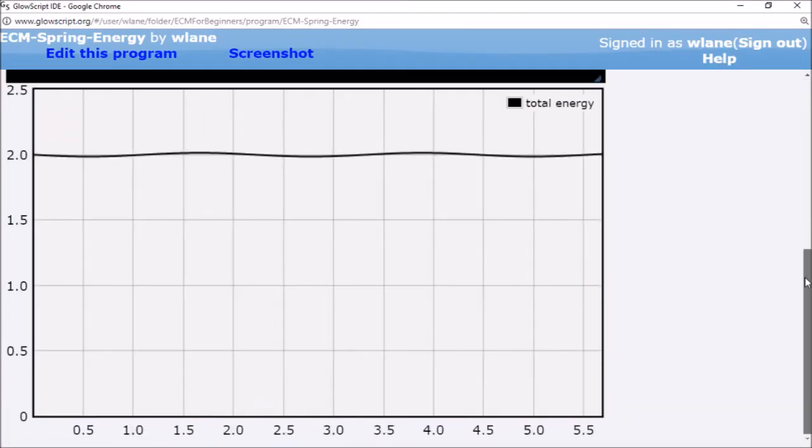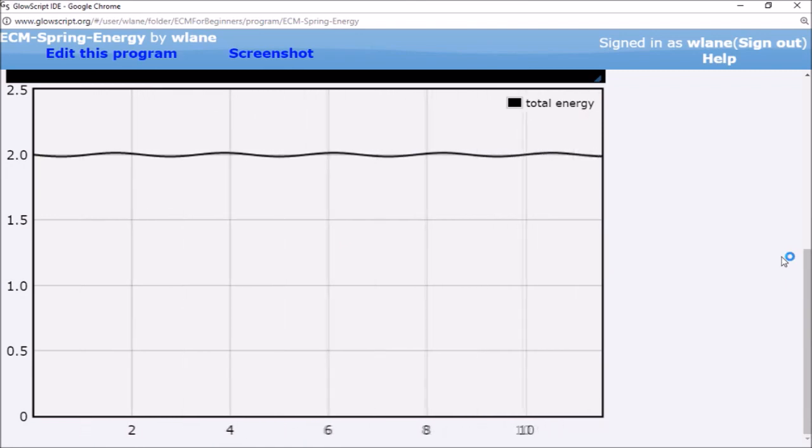We saw earlier that you can check the results of the Euler-Cromer method by seeing whether the total energy is conserved.